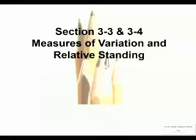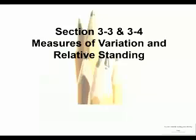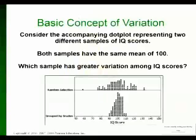Not only do I have a person who made 100 and a person who made a 10 — where are all the other scores in between that 10 and 100? So we're talking about measures of variation and measures of relative standing, that's 3.3 and 3.4. The basic concept of variation is just spread — how spread out the data is.